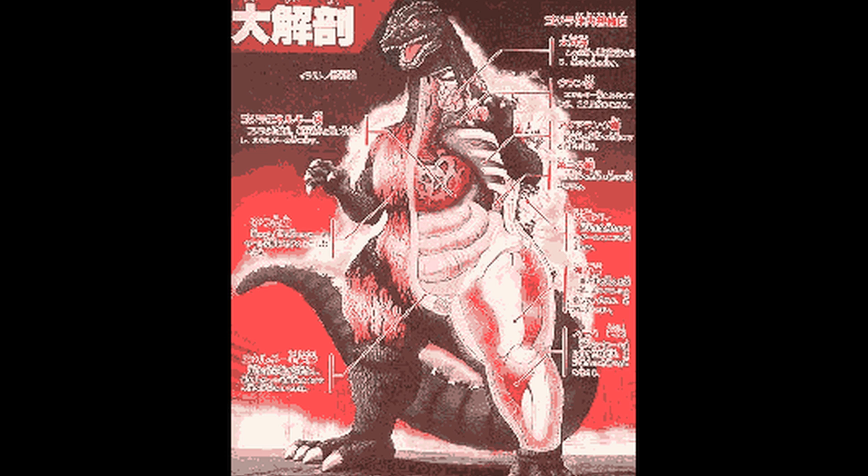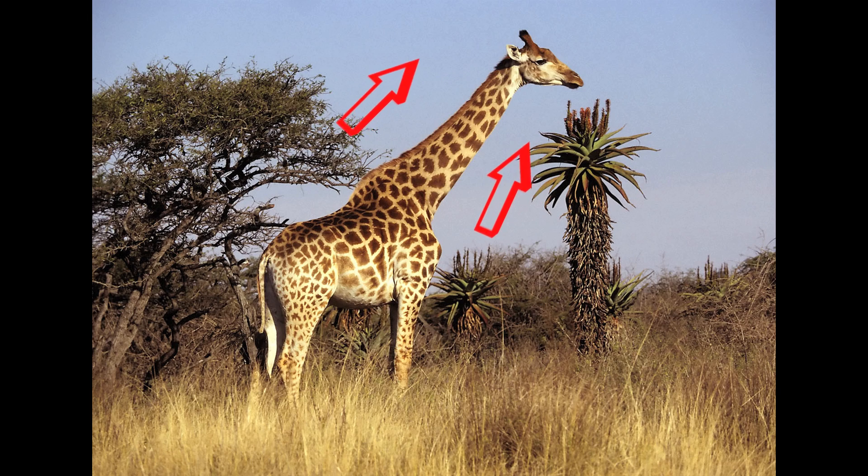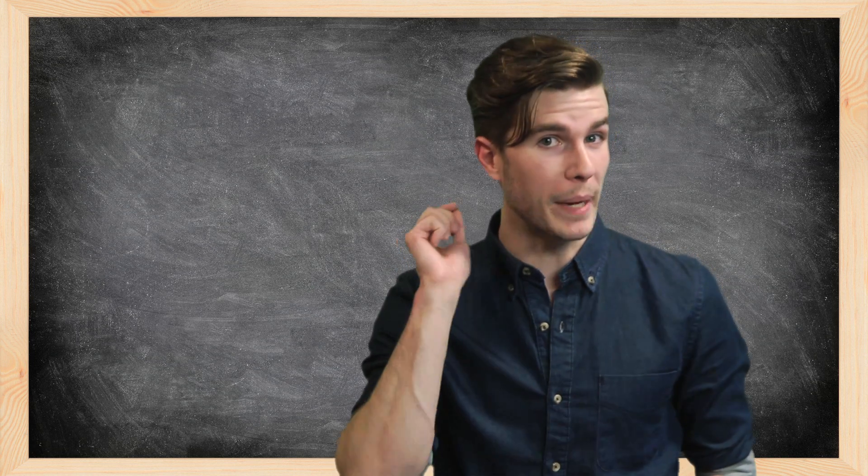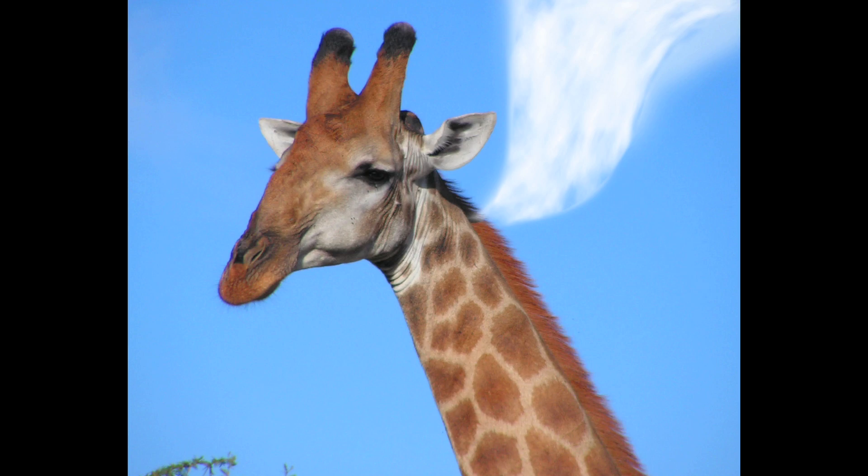In large creatures, circulation is a problem. Giraffes, for example, use enormous pressures to run their blood up to their brains. They have even evolved a structure at the base of their brains to diffuse that pressure so they don't pass out when bending over to drink.